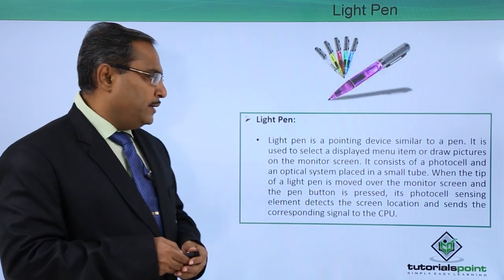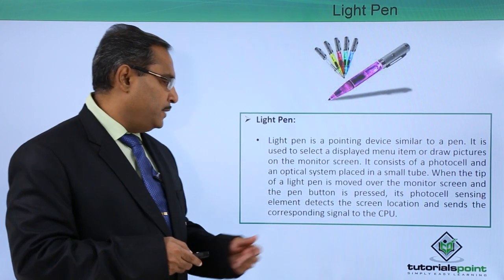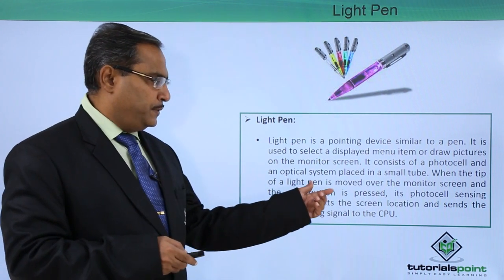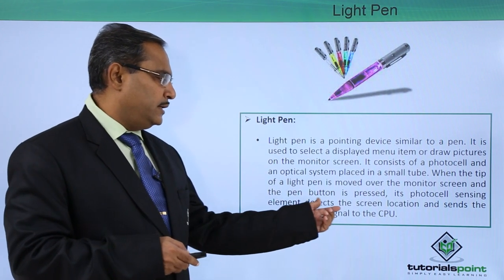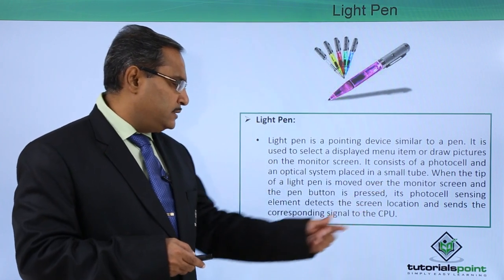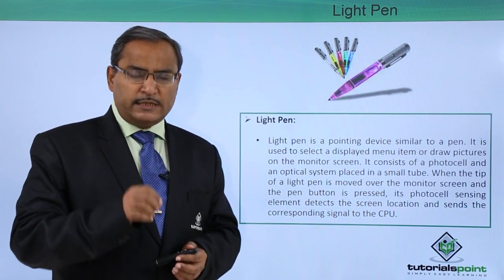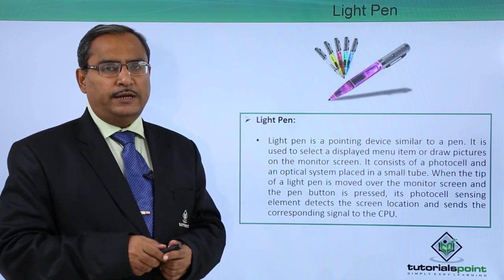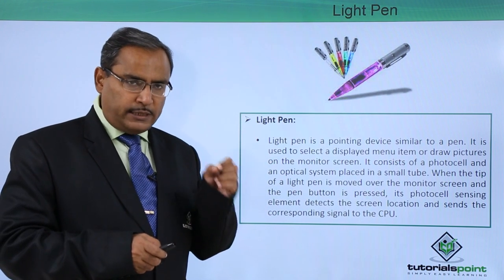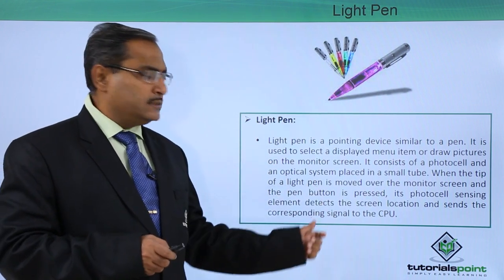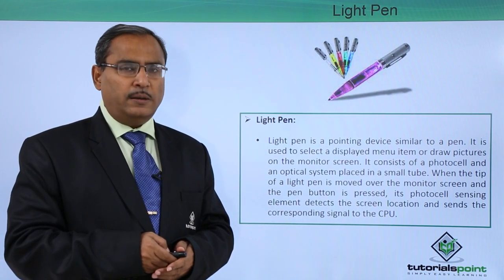These components are placed in a small tube. When the tip of a light pen is moved over the monitor screen and the pen button is pressed, its photo cell sensing element detects the screen location and sends the corresponding signal to the CPU. Using this light pen, we can draw some images on the computer screen. Whenever we are drawing something, the ball at the tip will be rolling, and some buttons are there with the help of which we can easily control this light pen to draw some image on the computer screen.